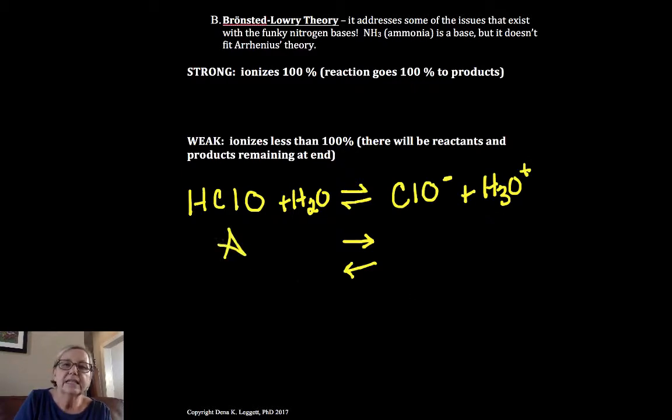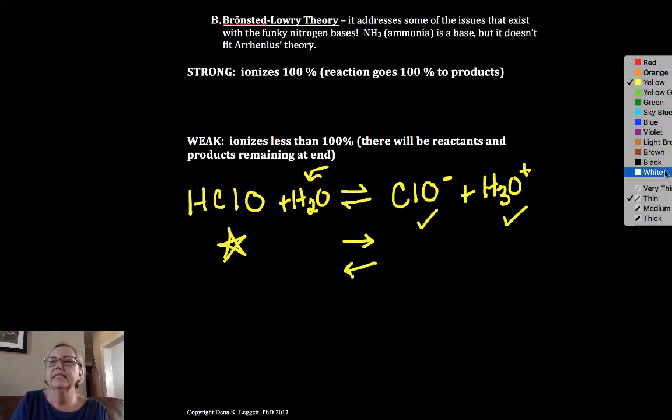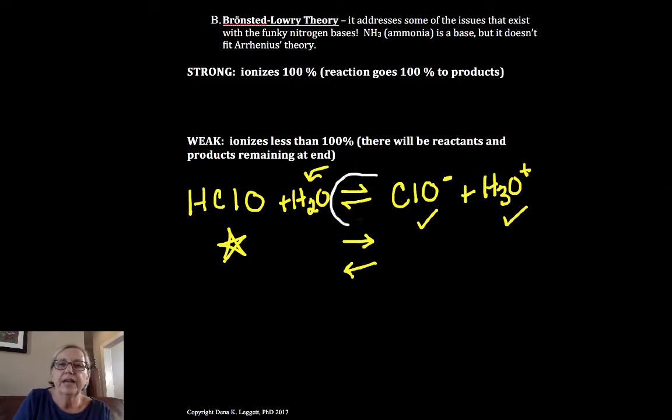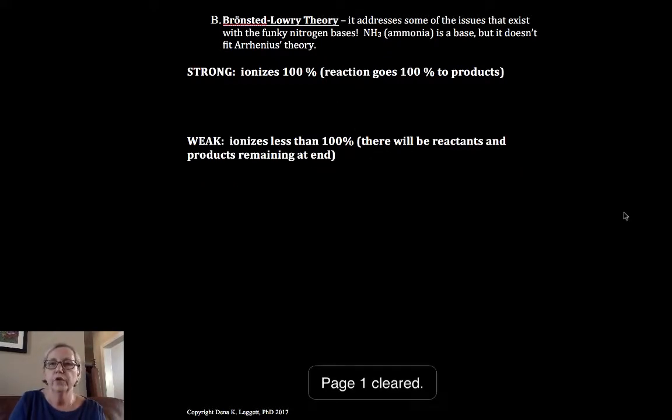On weak acid, most of the acids stay as the HClO, the molecular form, and a little bit of it dissociates or reacts with water to form ClO- and H3O+. The key here is that double arrow. We'll use a single arrow for strong and a double arrow for weak.